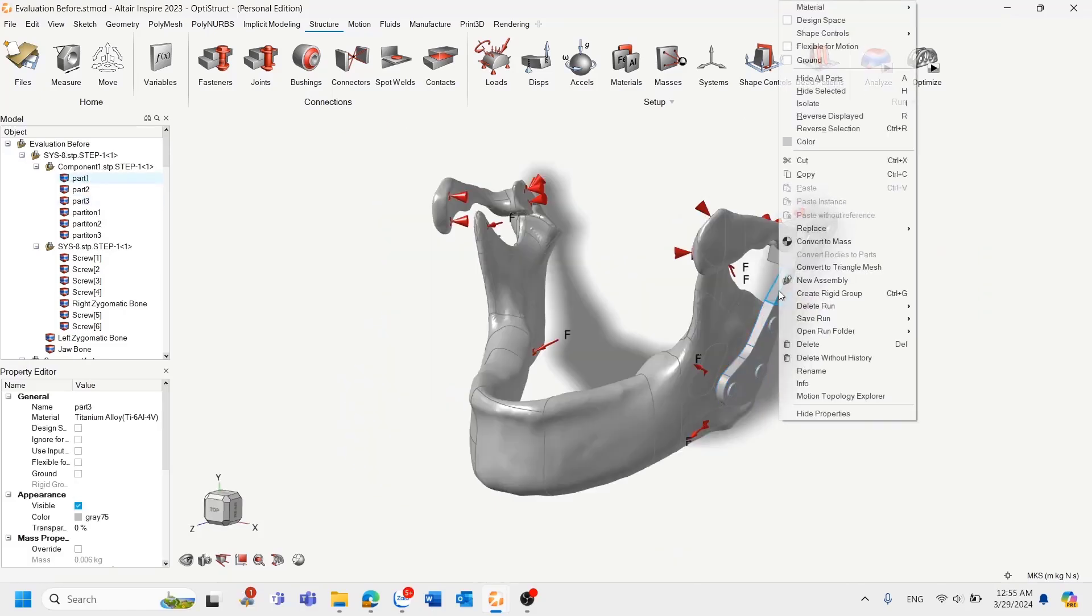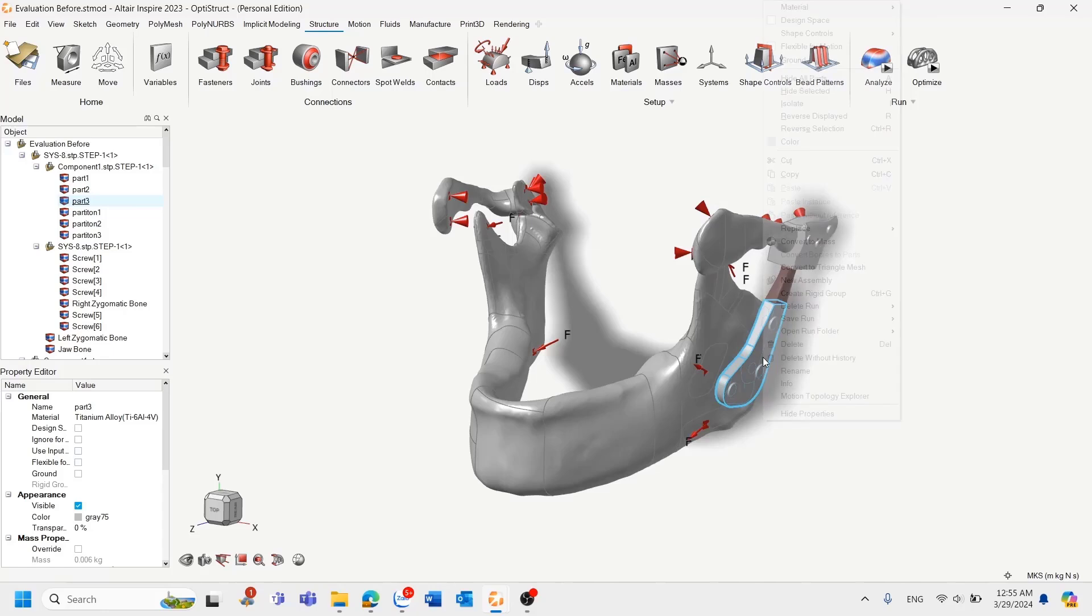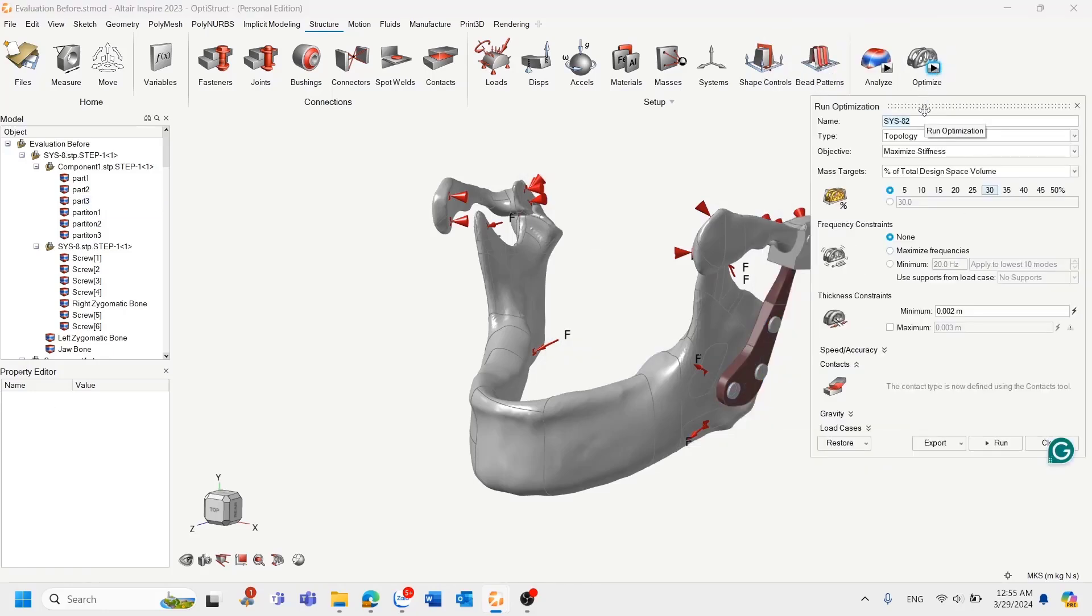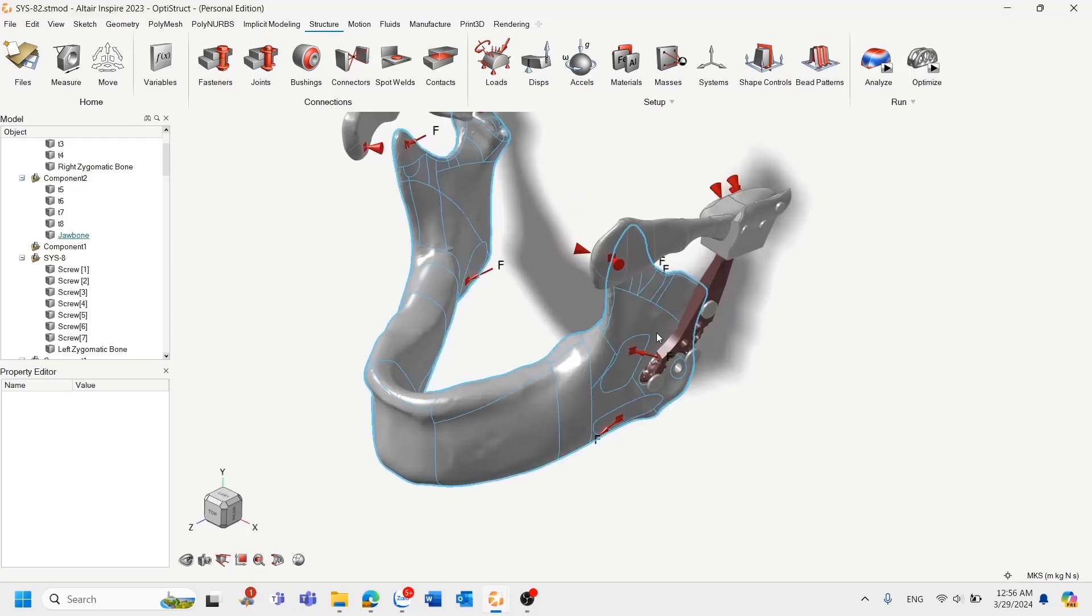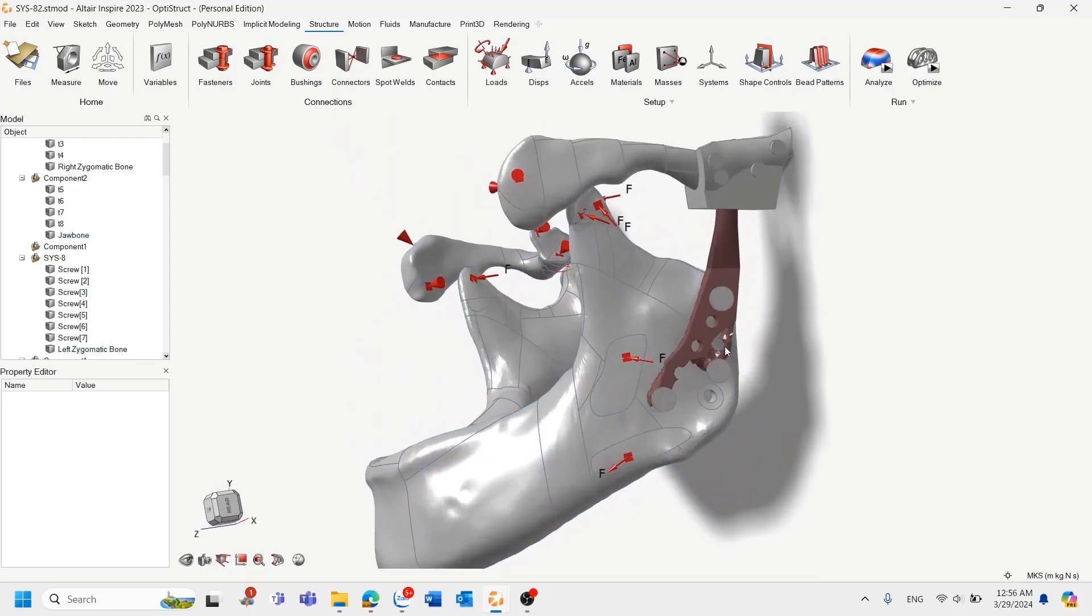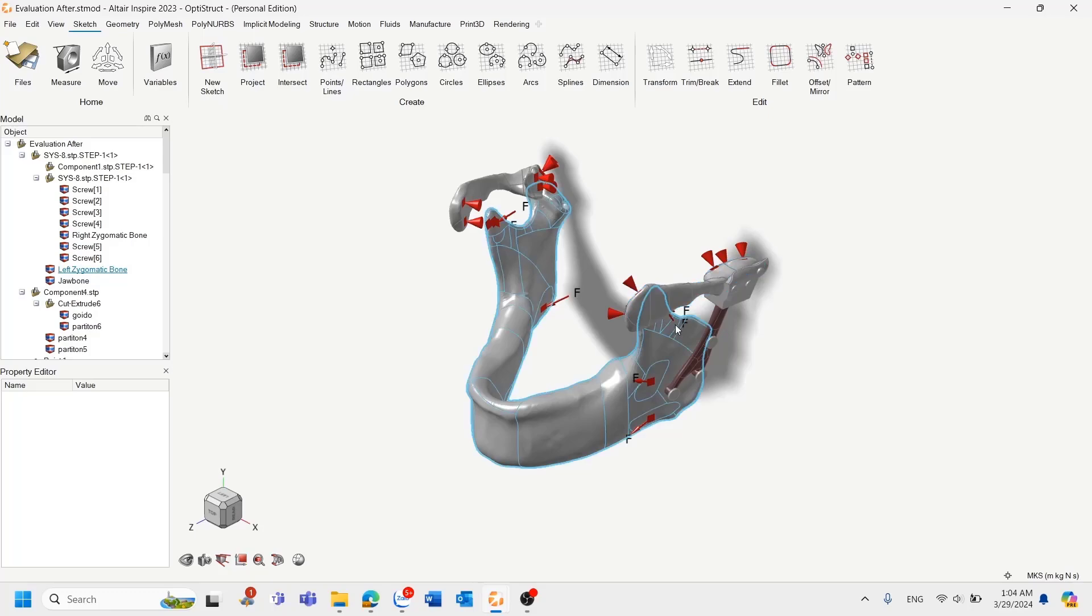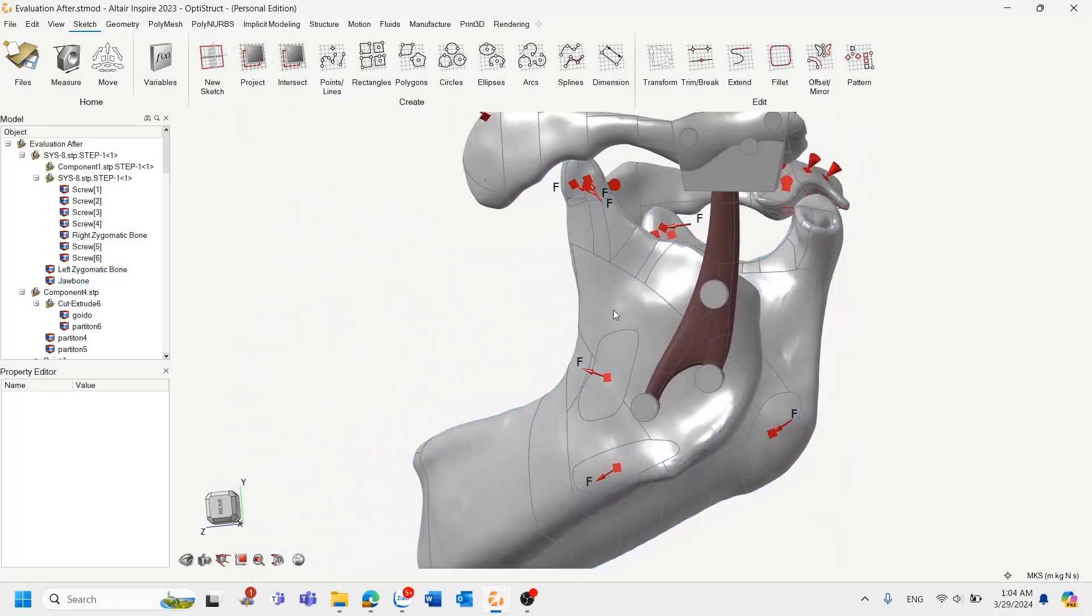Now, click here and then click the design space. We'll click the run function. We want to reduce 30% of the mass and hit run. Okay, so we have the optimized model here. It's kind of ugly. So we can fix that by using the PolyNURBS here with the graph or fit or pathway. So to reduce the time, I will skip this part. After using the PolyNURBS, we have a very beautiful design for the TMJ.